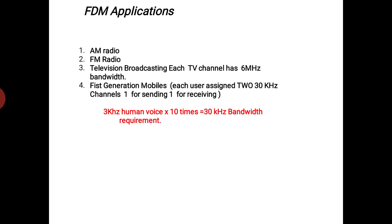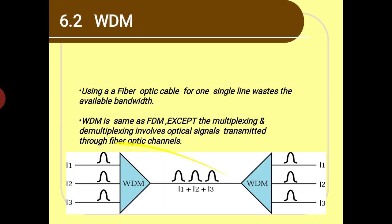In FM radio, the guard band is 10 times the original voice. We consider 20 kilohertz as the maximum frequency from instruments, so 20 into 10 gives 200 kilohertz or 0.2 megahertz. In television broadcasting, each channel needs 6 megahertz bandwidth, indicating the gap between two channels. First generation mobiles used 30 kilohertz bandwidth per channel, calculated as 3 kilohertz voice multiplied by 10, maintaining a 30 kilohertz gap between individual user channels. So first generation mobiles also used FDM.